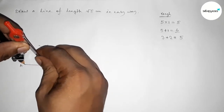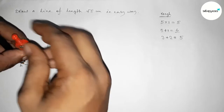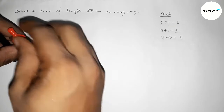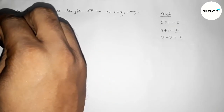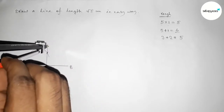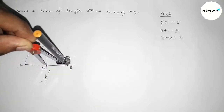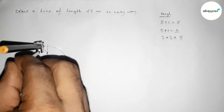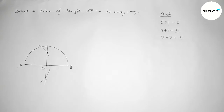Drawing a semicircle through points A and B. Next, taking a length of 2 centimeter by using the scale.